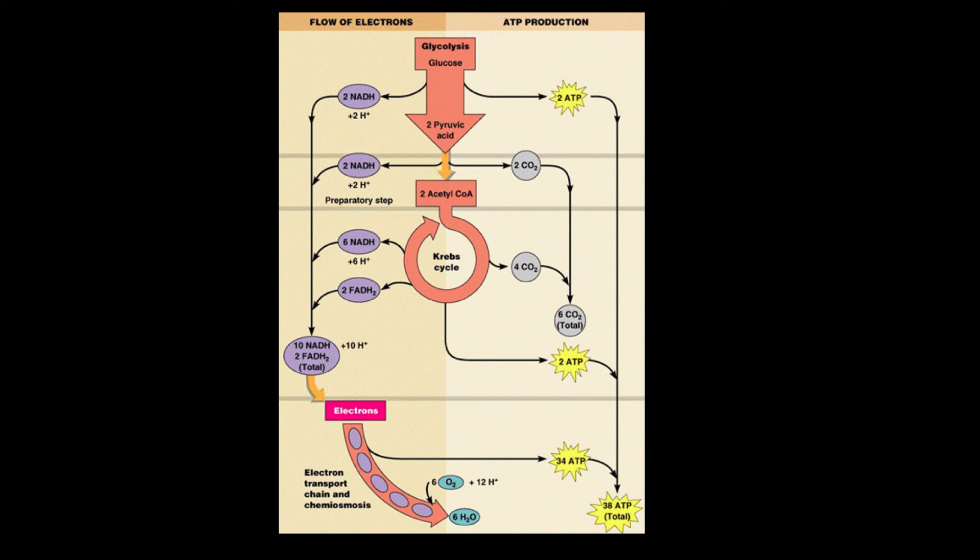In glycolysis, we produce two molecules of ATP and two NADH. The bridge between glycolysis and the Krebs cycle, we made two NADH.